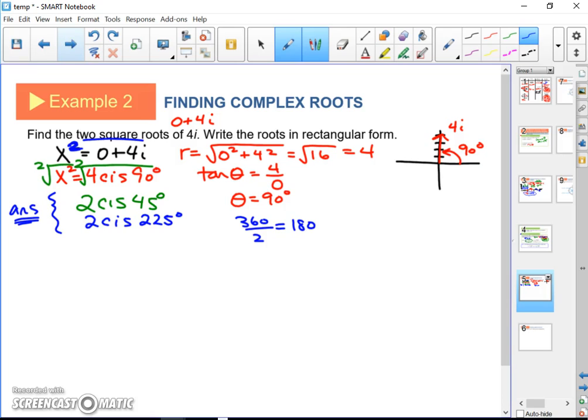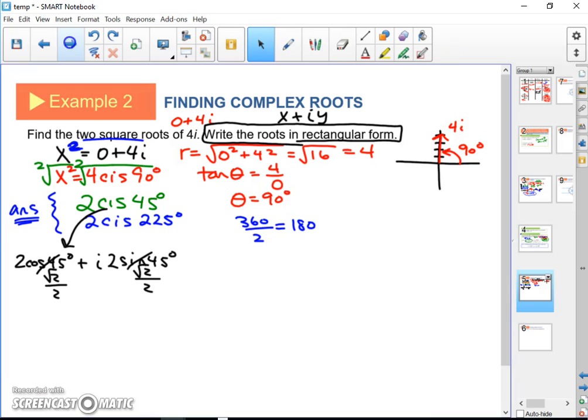Those are your two square roots. If we were allowed to stay in polar form, we would be finished. But unfortunately, when they tell us to write the roots in rectangular form, they made this problem a lot harder because we're going to have to take this and convert it back into rectangular. That's the hard part. So you've got to do them both, too. 2 cis 45. The x part is going to be 2 cosine 45. And then the y part is going to be 2 sine 45. So look at your chart. Cosine 45, we know it's square root of 2 over 2. And so is sine 45. We can cancel out the 2s. And we're going to get square root of 2 plus i times the square root of 2. That's one of our answers.